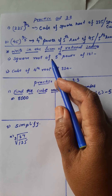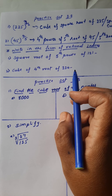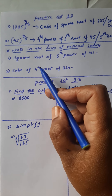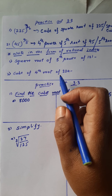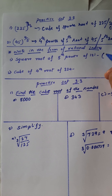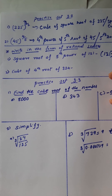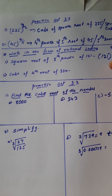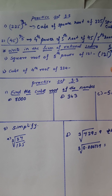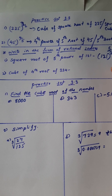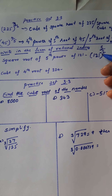Next, write in the form of rational indices. The question is given as the square root of the 5th power of 121. The base is 121, the power is 5, and the square root means 1 upon 2. So we write 121 raised to 5 upon 2.